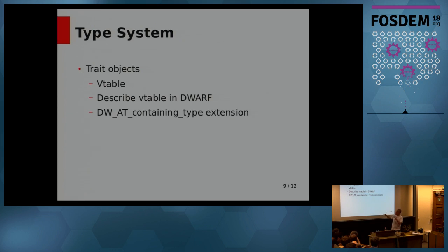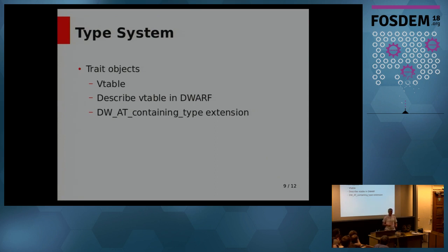Those are some of the corners of the type system that are troublesome. This little extension — it turns out there's actually another extension that uses 'containing type' to mean something else that's been in GCC for 20 years. That's how I got LLVM to accept this extension, because there was already a comment saying it's an extension, and I just added one more saying now it's a double extension. But that is the extent of the documentation — a comment in LLVM.